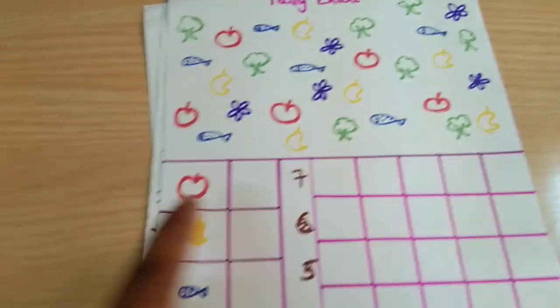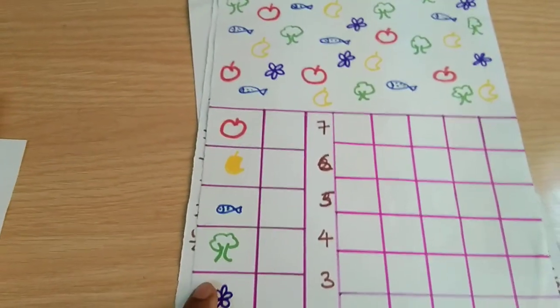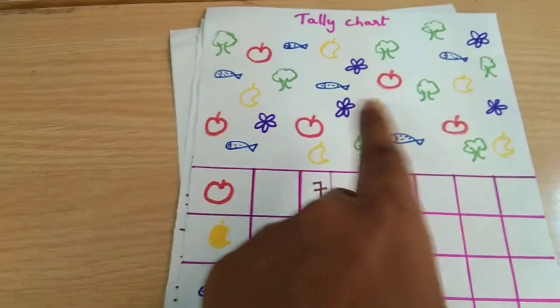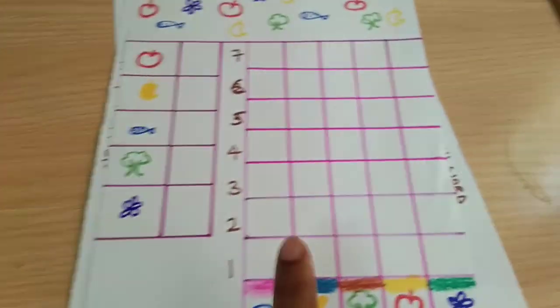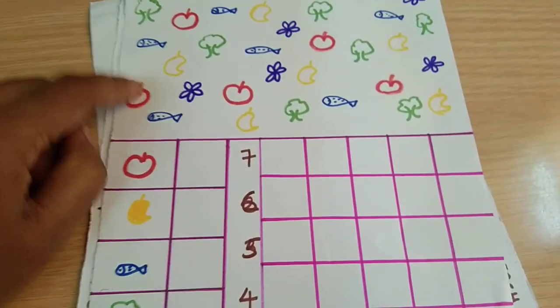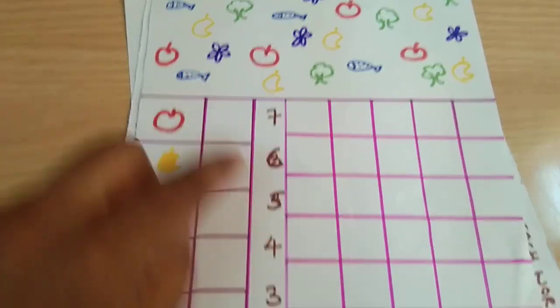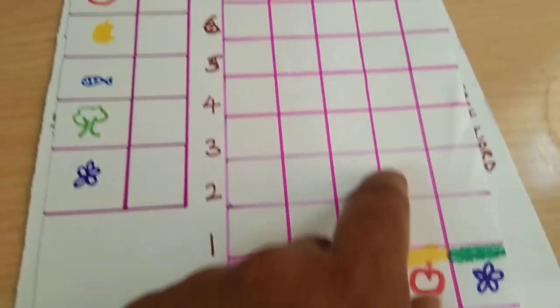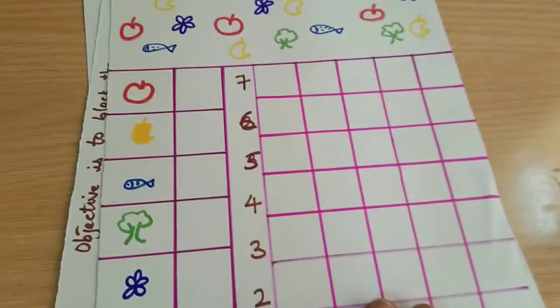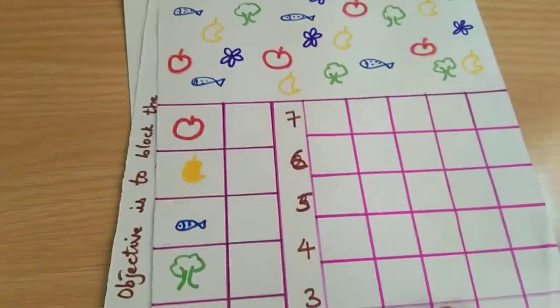In this box I have drawn the pictures and given the space for him to look at the number and fill in the number here. On this grid this is the graphing. Suppose apple, he has to count apple one, two, three, four, five, write number five, and under apple here he'll have to shade it till five. This is Sonali's idea, I hope you don't mind Sonali, a few ideas I have taken from you.